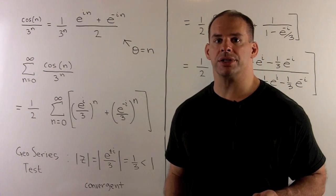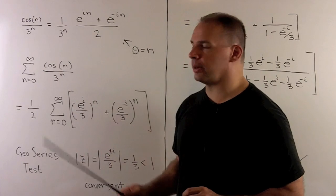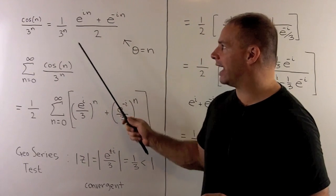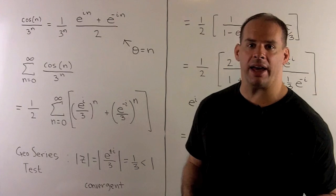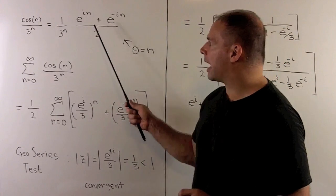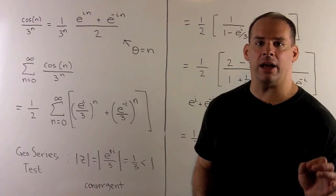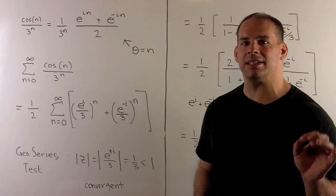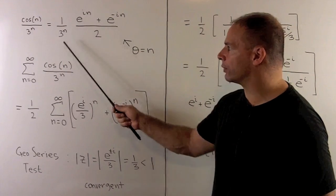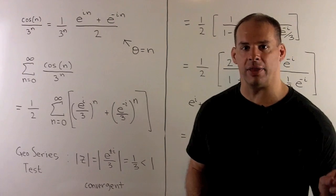Let's consider each term of our series. So we have cosine of n over 3 to the n. We apply Euler's formula. I have 1 over 3 to the n times e to the i n plus e to the minus i n over 2. So I can group like terms. So we'll have e to the i n over 3 to the n is equal to e to the i over 3 to the nth power. We'll have e to the minus i n over 3 to the n is equal to e to the minus i over 3 to the nth power.